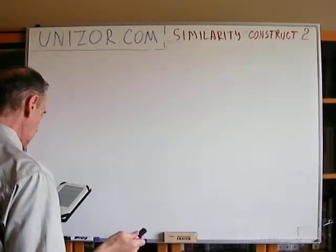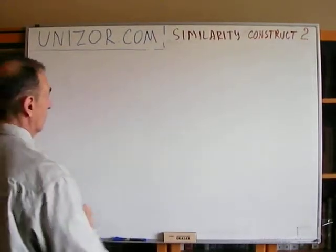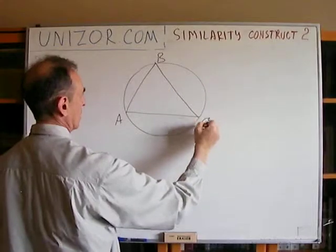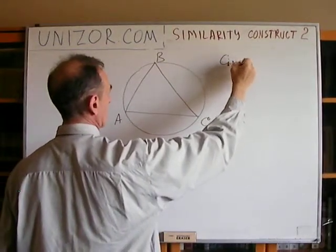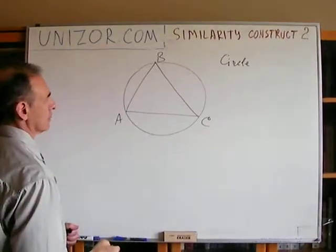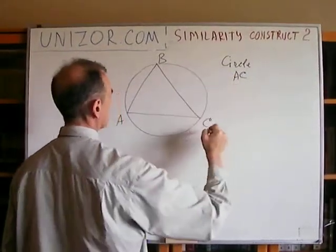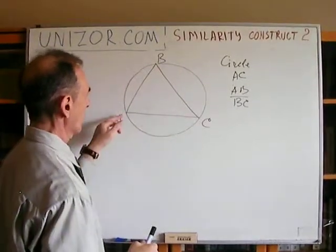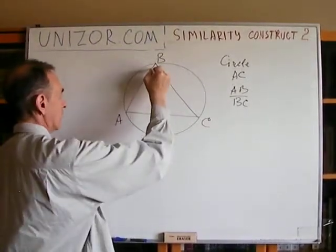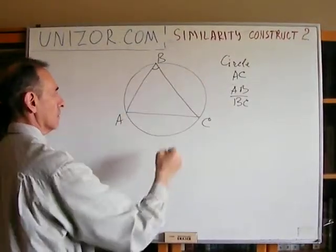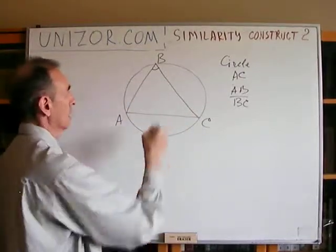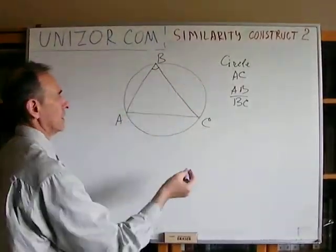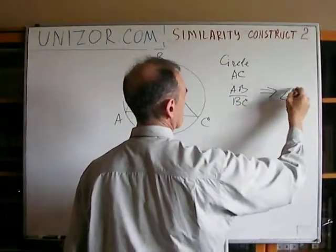Inscribe a triangle into a given circle by its one side and the ratio of the two other sides. The triangle is inscribed into its circumscribing circle. Given side AC and ratio AB over BC — if you have a circle and a chord, then the inscribed angle at the top is defined, because any inscribed angle supported by the same arc is equal. So we derive the value of angle ABC.